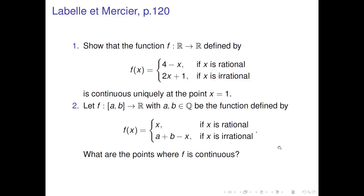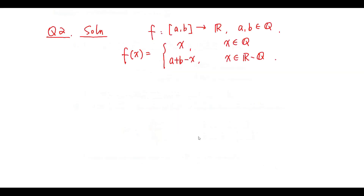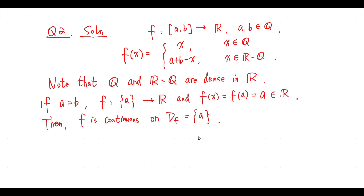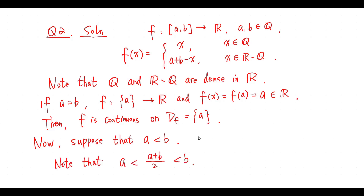Question 2. Let f be the function defined by this one. What are the points where f is continuous? Solution. Note that the set Q and the set R minus Q are dense in R. If a equals b, then f is continuous on the domain of f. Now suppose that a is less than b. We have this inequality.